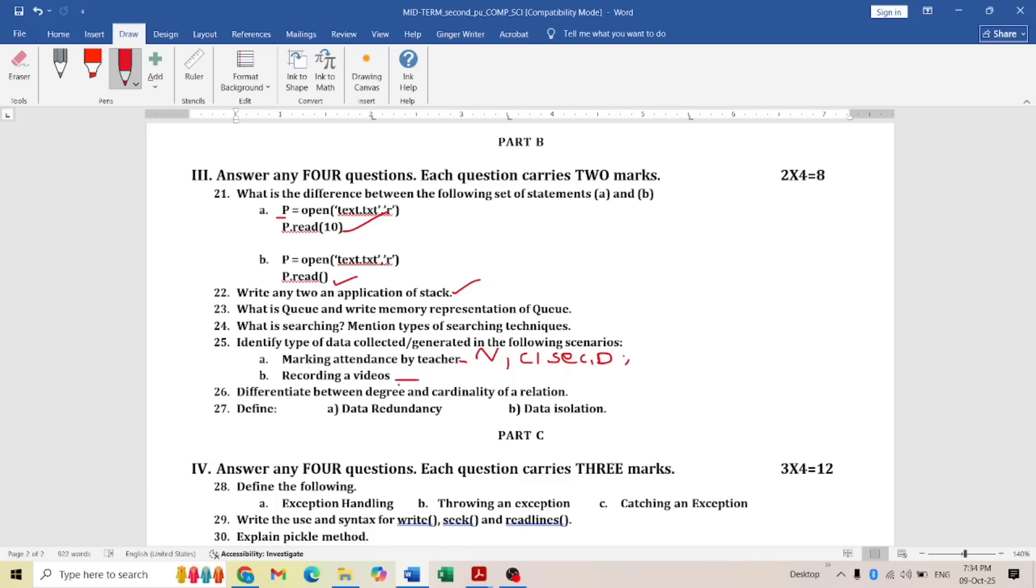Next one: recording a video. What are we recording? You have to mention the scenario we're taking and the topic. Recording a video is nothing but unstructured data. When mentioning, first mention it is structured data and what details are collected by marking attendance. For recording videos, mention it is unstructured data and what things we're collecting: the team, the students recording the video, the scenario, and which place—all this. It's your own answer you can mention.